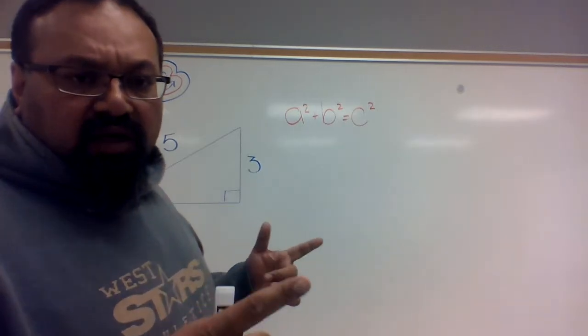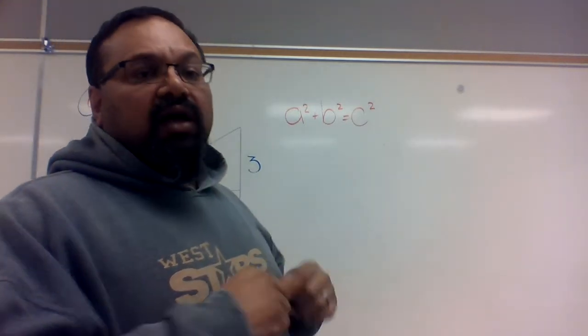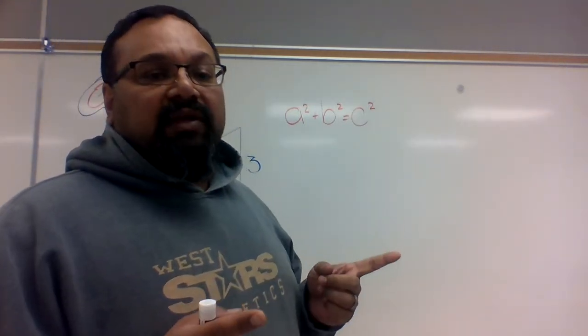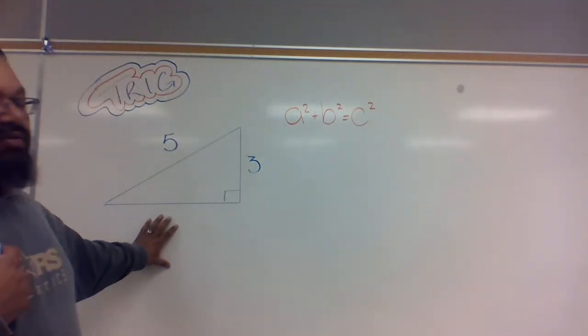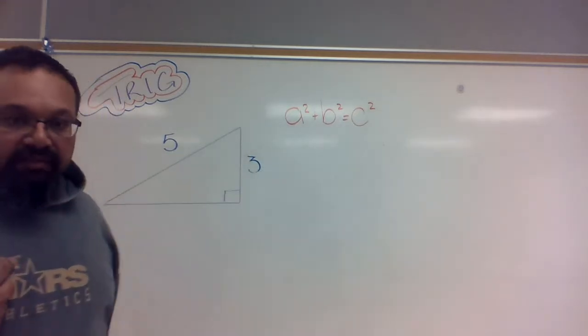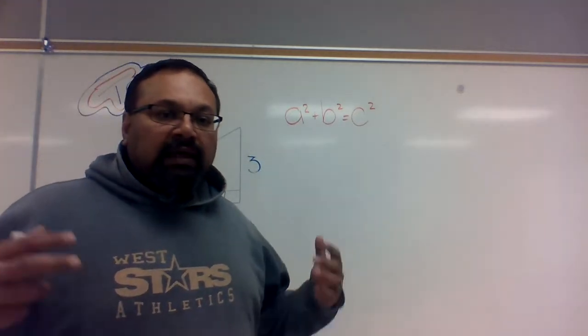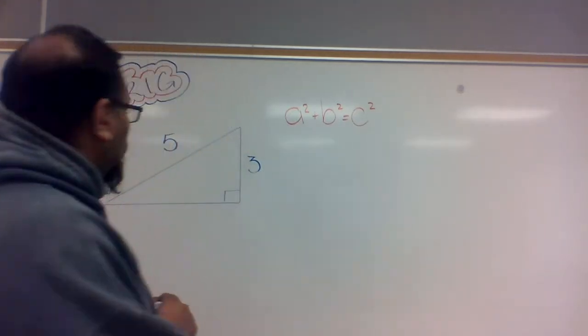First thing we do is identify what we have, what we don't have, and then we manipulate the formula. As I stated before, I usually make the unknown, the side I don't have, the value of B. It's just a preference for me, just the way I do it actually.